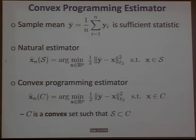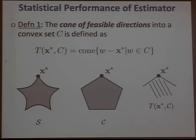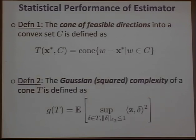To understand the performance of this estimator, we need two definitions. The first, on the computational or convex geometry side, involves the cone of feasible directions of a convex set: given a point x* in a convex set, what are the directions you can move locally while remaining in the convex set? For a point x* in a complicated set, I take a convex relaxation of S and the feasible directions are all directions into C.